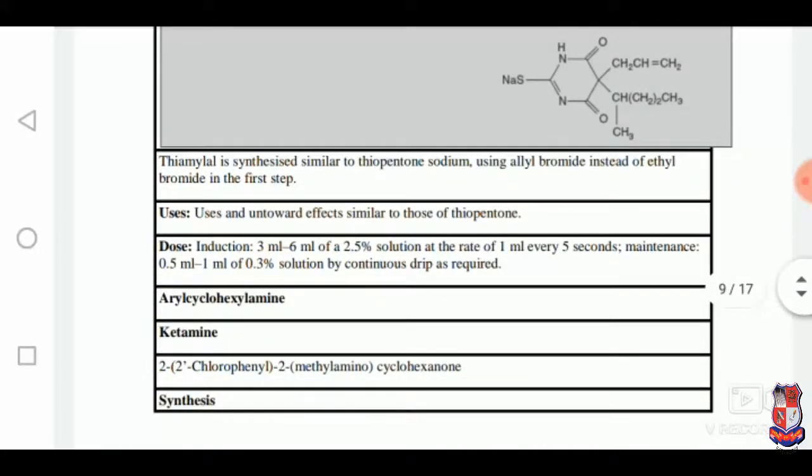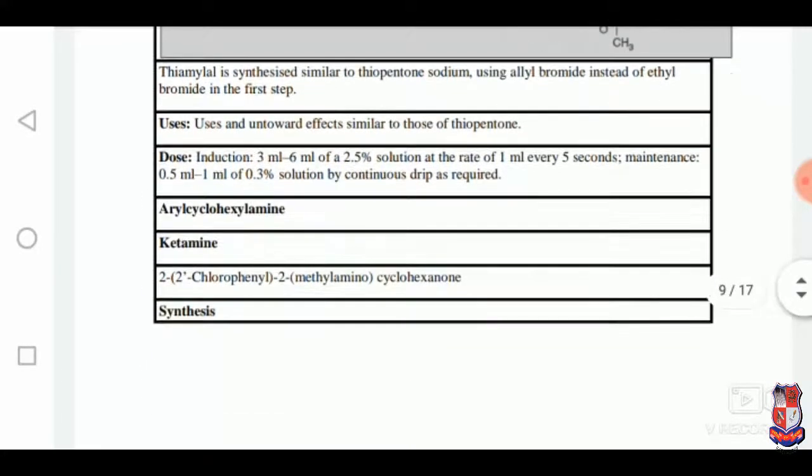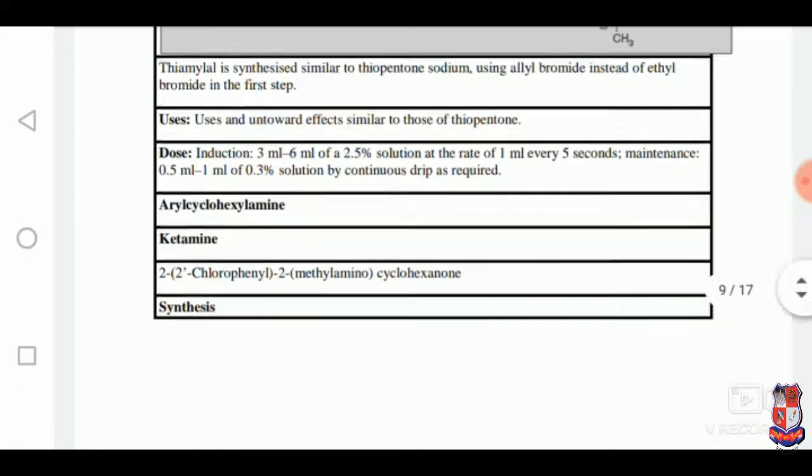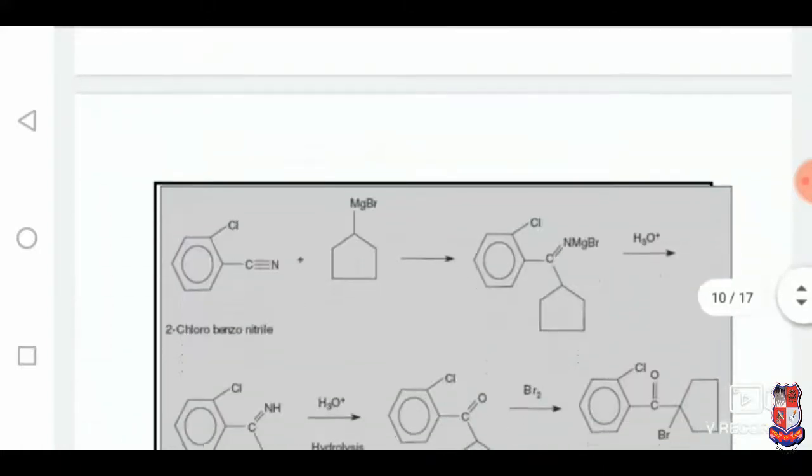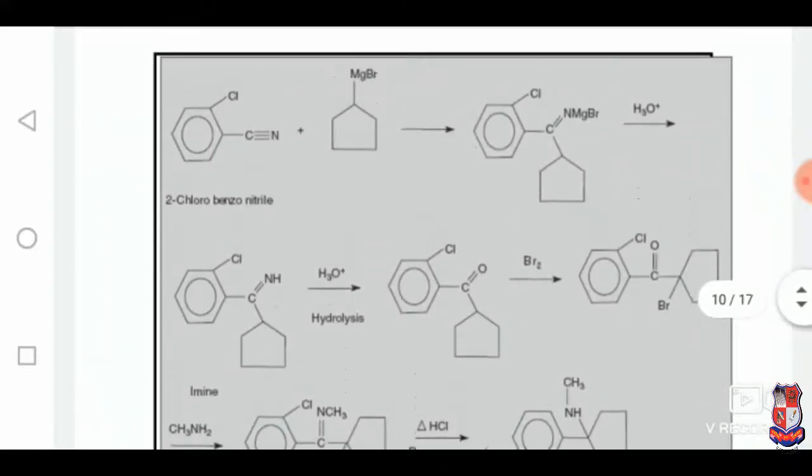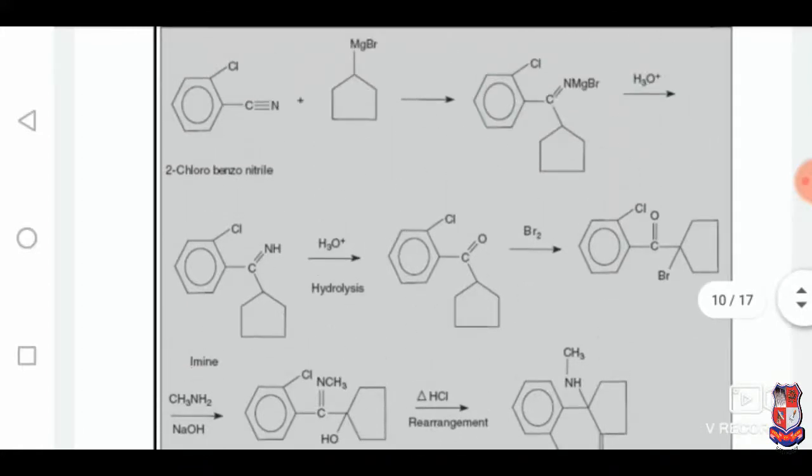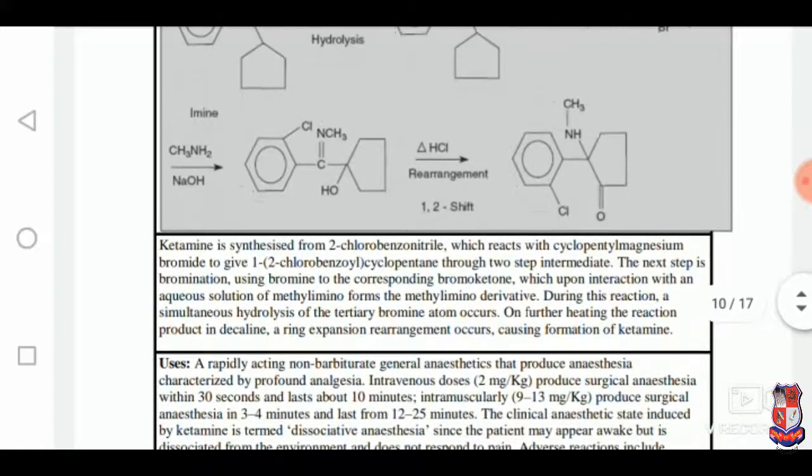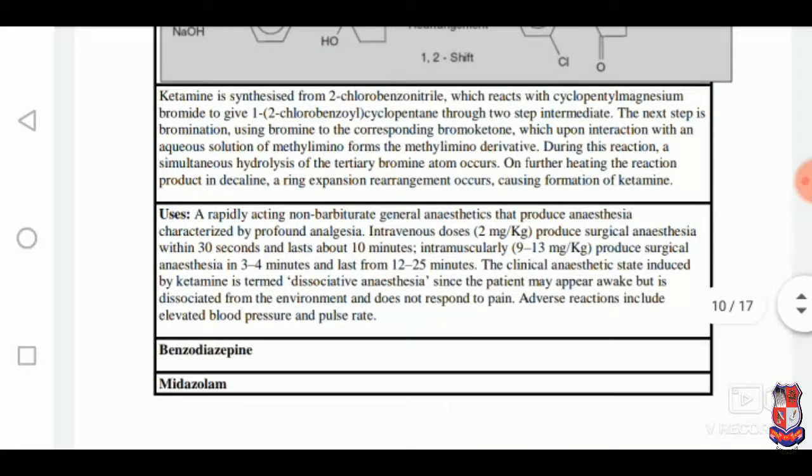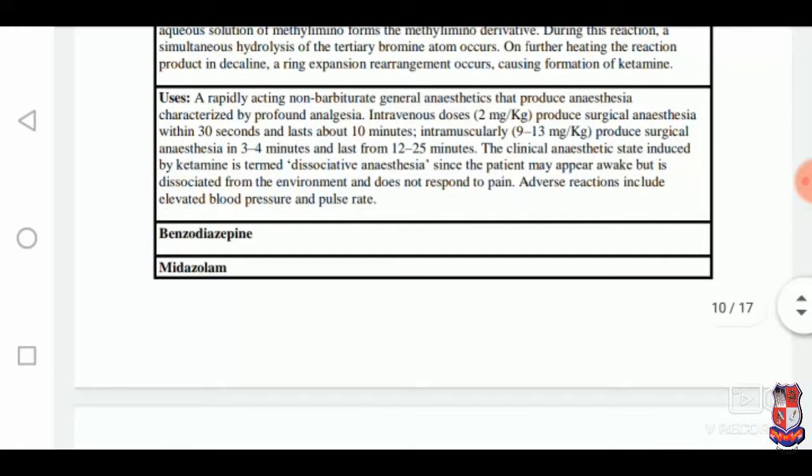Next component is arylcyclohexyl. First one is ketamine, synthesized from 2-chlorobenzonitrile. It is also a complicated synthesis with several intermediates. Uses include: they are non-barbiturate general anaesthetics that produce anaesthesia characterized by profound analgesia.